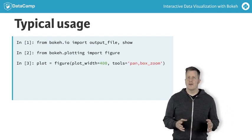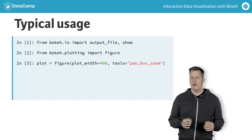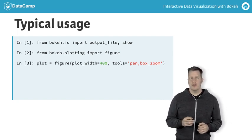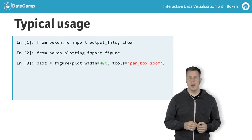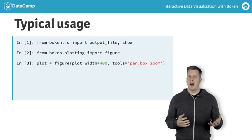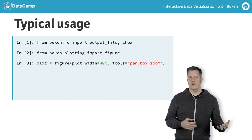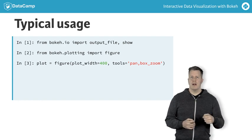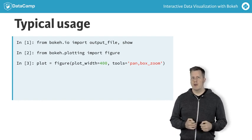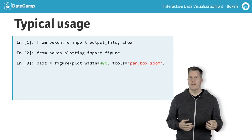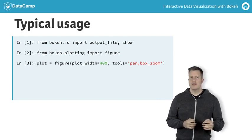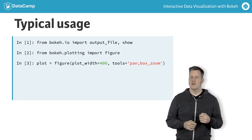Next, we call the figure function with some arguments that control general properties of a plot. In this case, we have passed plot_width equals 400 to specify that the overall canvas for drawing the plot should be 400 pixels wide. There's a corresponding plot_height if you want to change the default canvas height. We also have passed in the argument tools equals pan, box_zoom. This tools parameter can accept a list of actual tool objects, or more commonly, a comma-separated string that lists the names of built-in tools. In this case, we choose to add a tool for panning the plot region and a tool for drawing rectangular regions to zoom in on.